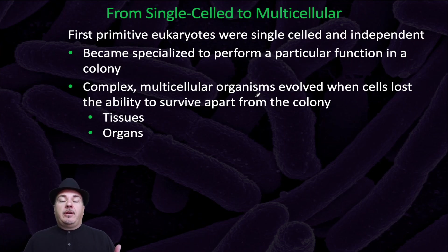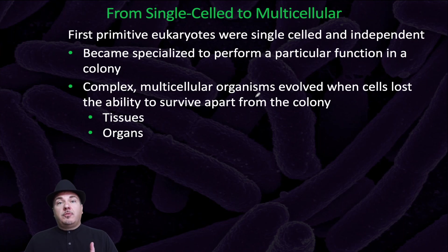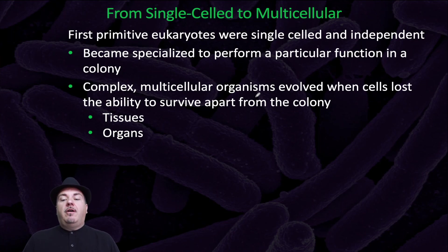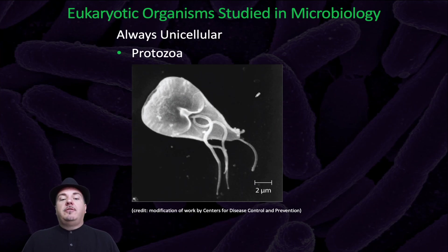When you think about eukaryotes, you typically think about the multicellular organisms — things like animals, plants, and mushrooms, which are a type of fungi. Those are multicellular eukaryotes. There also are unicellular eukaryotes, like yeast, which is a type of fungi that's unicellular, or protists, which are a type of eukaryote that's unicellular. The first primitive eukaryotes were single-celled and independent. They became specialized to perform a particular function in a colony, and then complex multicellular organisms evolved when cells lost the ability to survive apart from the colony, becoming tissues and organs.